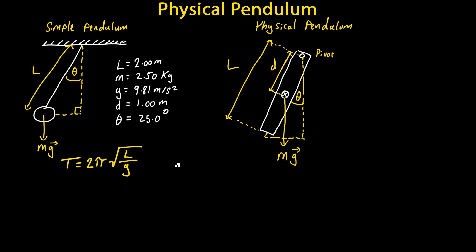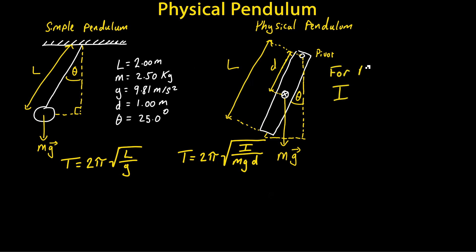For the physical pendulum, the period T is equal to two pi multiplied by the square root of the moment of inertia for this particular shape — the thin rod — divided by the mass of the pendulum, multiplied by the gravitational acceleration, multiplied by the distance from the pivot to the center of mass. The moment of inertia for a thin rod where the pivot is at the end is equal to one third times the mass of the rod times the length of the rod squared. You can either use calculus to work this out or look up these values online or in a textbook.